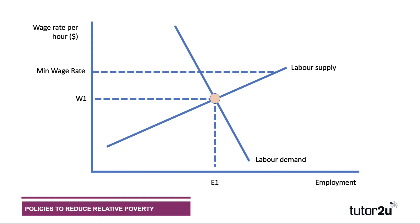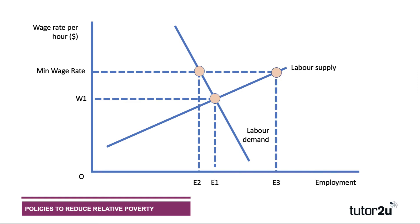This has several consequences. First of all, other things being the same, if employers have to pay a higher minimum wage, they may cut back on employment - so employment may move from E1 to E2, moving up the labour demand curve. But at higher wages, more people are looking actively to find work, so the labour supply might expand from E1 to E3. This can create some excess labour supply, or unemployment.